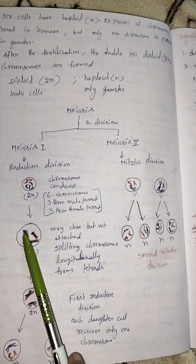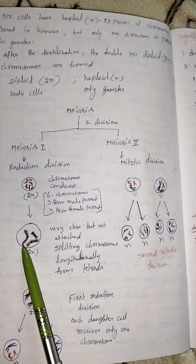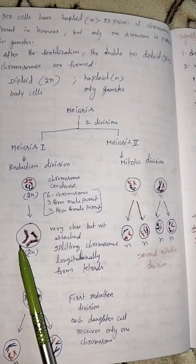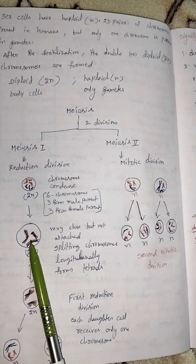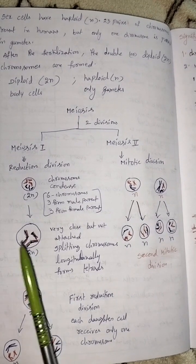Tetrad means 4. It is very close but not attached, so it forms tetrads.